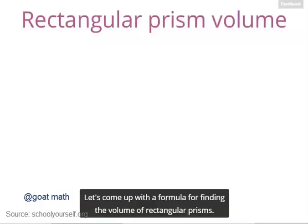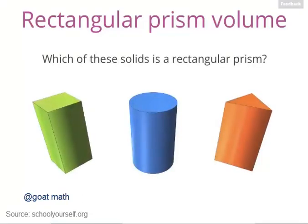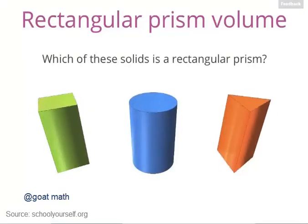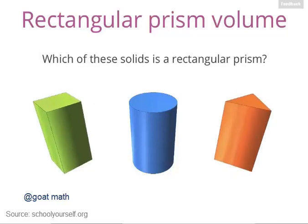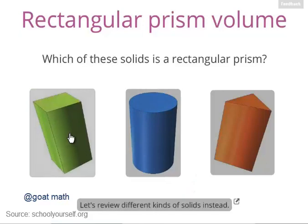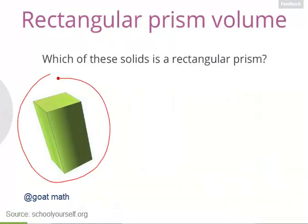Let's come up with a formula for finding the volume of rectangular prisms. First, let's make sure you remember what rectangular prisms are. Which of these solids is a rectangular prism? This solid is a rectangular prism. So let's come up with a formula for its volume.